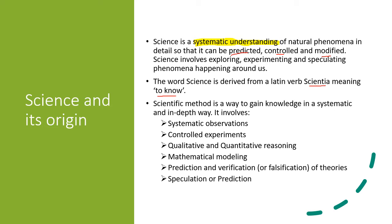This scientific method is a way to gain knowledge in a systematic and in-depth way. These are the steps: systematic observation, controlled experiments, qualitative and quantitative reasoning, mathematical modeling, prediction and verification or falsification of theories, speculation or prediction.